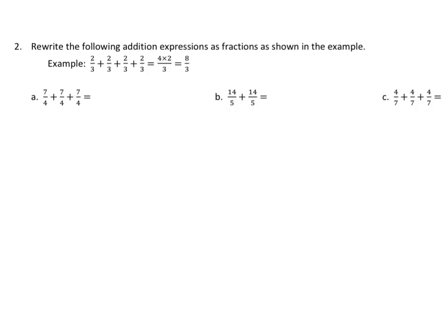Let's run through some examples quickly. So we have 7 fourths plus 7 fourths plus 7 fourths. We will write 3 times 7 over 4. That equals 21 fourths.